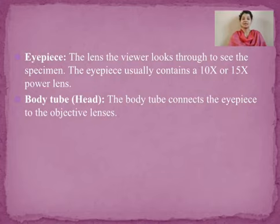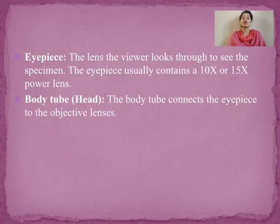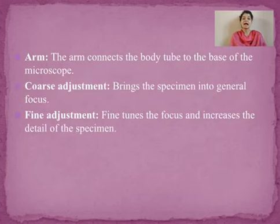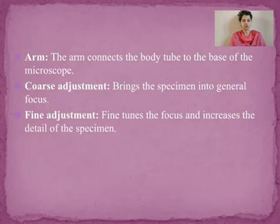The eyepiece usually consists of 10x or 15x power lenses. The body tube, also termed the head, connects the eyepiece and the objective lens. The arm acts as a support system and connects the body tube to the base of the microscope. The coarse adjustment knob brings the specimen into general focus.